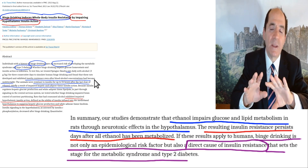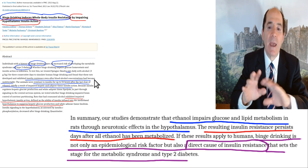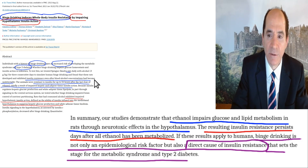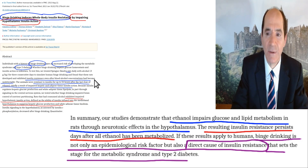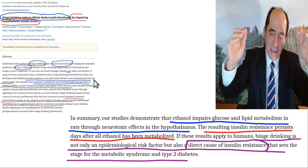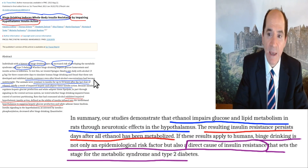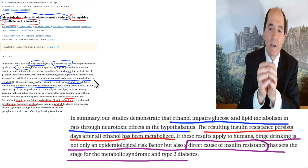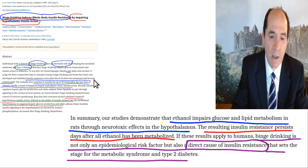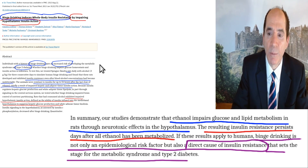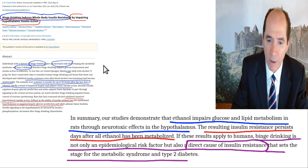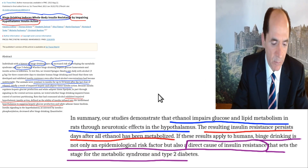Alcohol does a whole bunch of things that mirror diabetes, contributing to insulin resistance. The smart move is to not drink any alcohol at all. It cranks up NADH, messes up the hypothalamus, and is terrible for the brain — alcohol pickles and shrinks the brain. A 40-year-old alcoholic's brain can look like that of an 80-year-old.